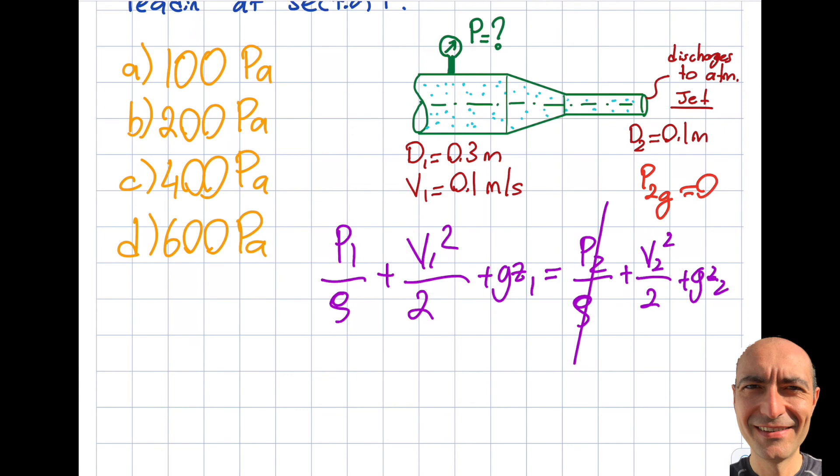P2 is gone because I'm using gauge terminology. Another thing is V2 is actually missing. The elevation is fairly constant, so I will neglect gz1 and gz2.